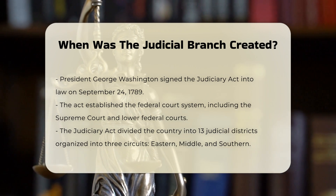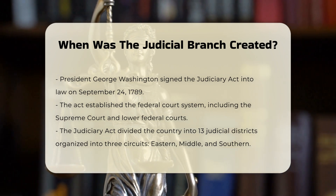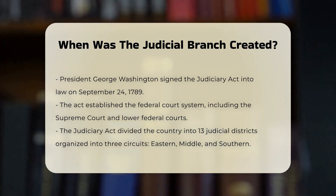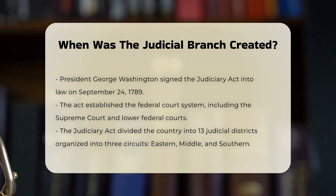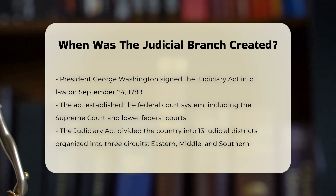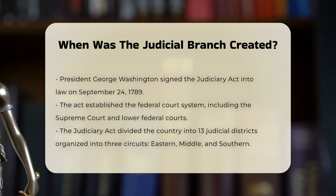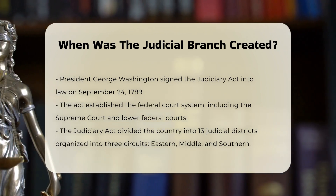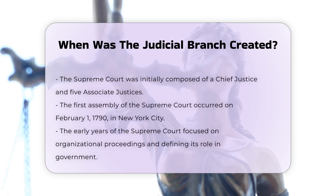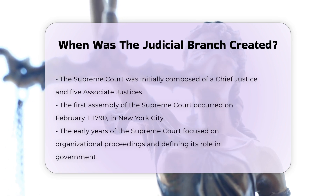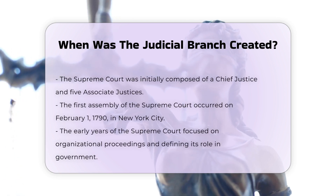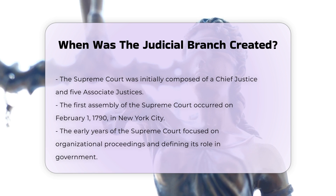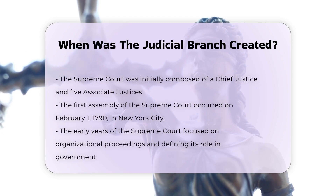The Judiciary Act of 1789 divided the country into 13 judicial districts, which were organized into three circuits — the Eastern, Middle, and Southern. The Supreme Court, composed initially of a chief justice and five associate justices, was to sit in the nation's capital.